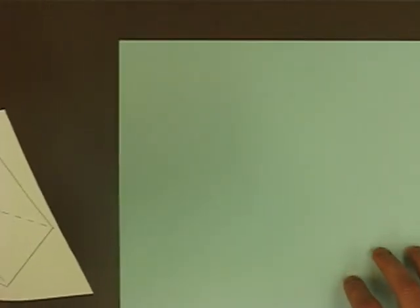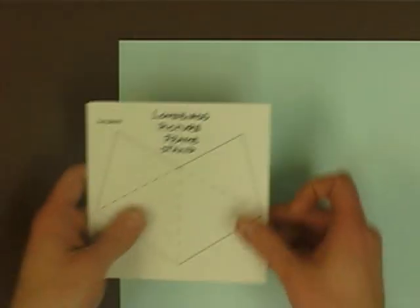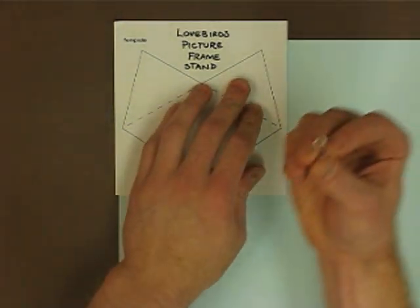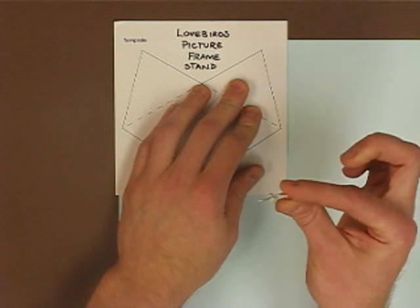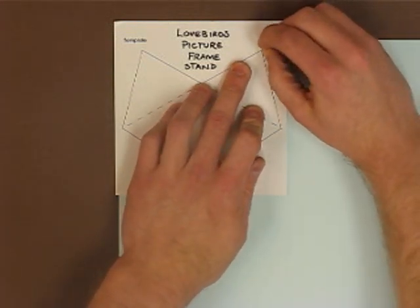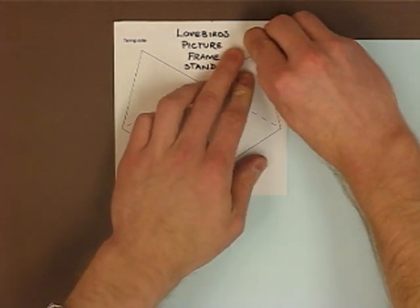Take the paper that you're going to use the stencil on, lay the stencil over it, and use a tack—just your average plastic tack—to go through on a work surface that you can puncture.